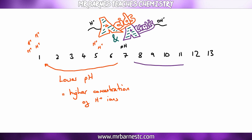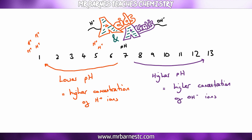The same applies to alkalis — as you go from pH 7 up to pH 13, the higher the pH, the higher the concentration of OH- ions. It's also important to remember that at pH 7 there are no H+ ions and no OH- ions — it is just water, H2O.